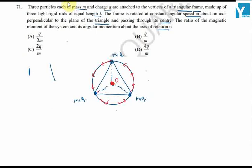We have a triangular frame having length L, and in that frame we are having particles of mass M and charge Q. Then we start rotating the frame with an axis passing through point O perpendicular to the frame.